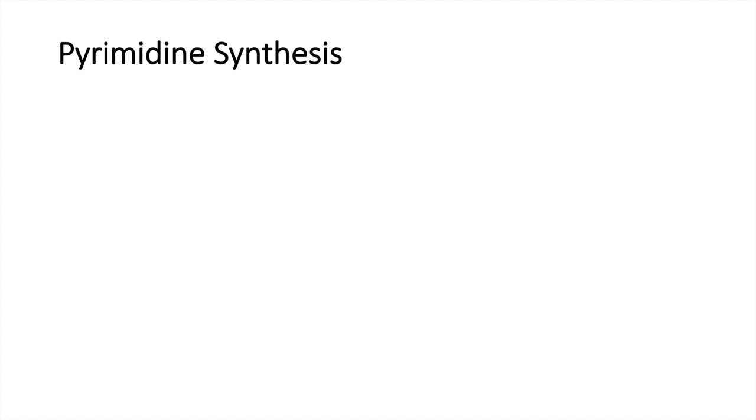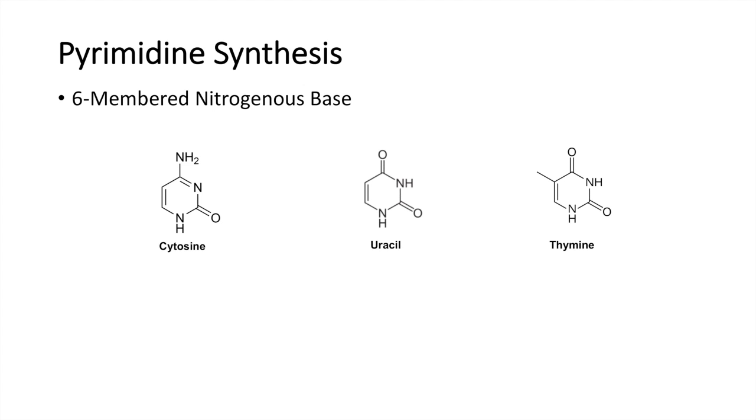So to begin, what are pyrimidines? Well, pyrimidines are six-member nitrogenous bases. We've got one which is known as cytosine, another known as uracil, and another known as thymine. An easy way to remember this is the mnemonic device known as CUT the pyramids. So pyramids should help you remember pyrimidine and CUT - C-U-T for cytosine, uracil, and thymine.